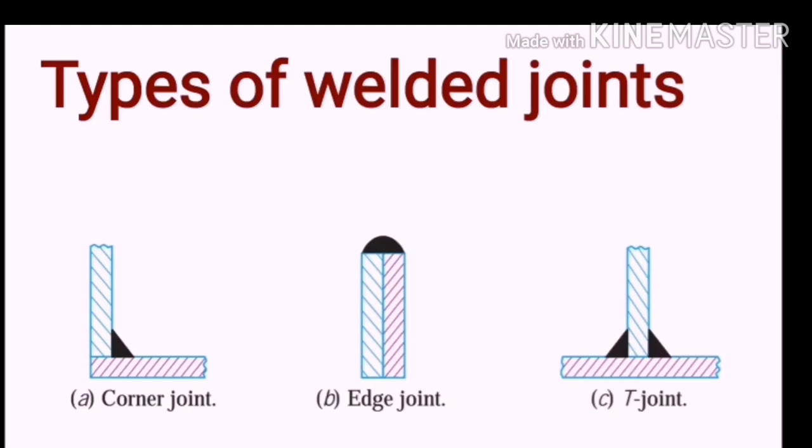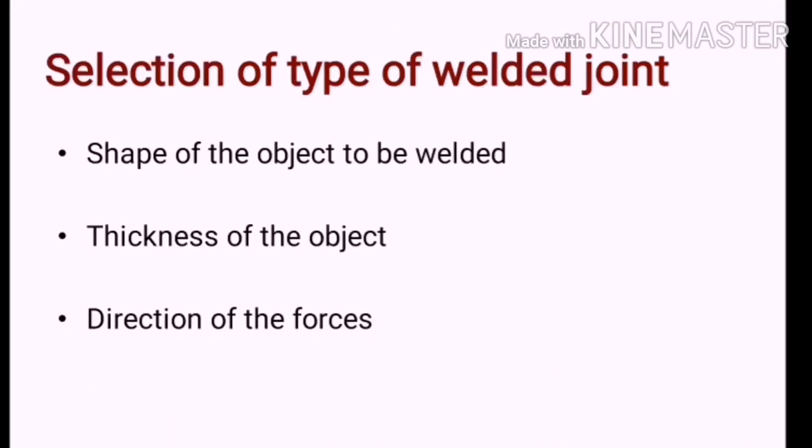Apart from lap joint and butt joints, the other types of welded joint are corner joint, edge joint and T joint. Till now, we have studied regarding the various types of welding joints such as lap joint, butt joint, corner joint, T joint etc.